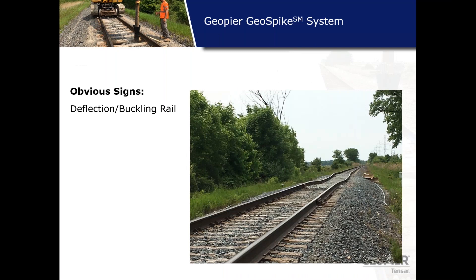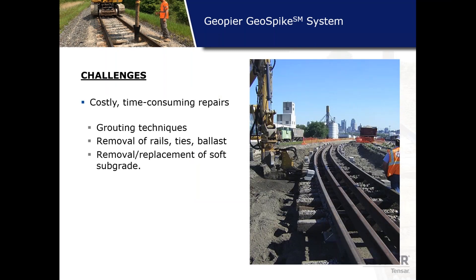More obvious signs are deflection or buckling of the rail, which can result in restrictions of rail traffic speeds, usually ending up in slow orders. These have impacts throughout the connected networks that these lines support. These delays are costly and require quick action to fix them, and many repair solutions have been around for a while and many of them are costly and time consuming.